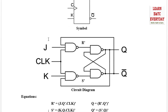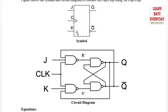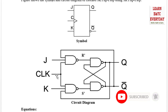Looking at the JK flip-flop symbol: J, clock, and K are the inputs, and Q and Q complement are the outputs. The circuit is similar to an SR flip-flop — if you replace J and K with S and R respectively, you get an SR flip-flop. The key modification is that Q complement is fed back as one input to the first NAND gate, and Q is fed back to the second NAND gate. Each NAND gate now has three inputs instead of two. This feedback is what eliminates the invalid state and introduces toggling.